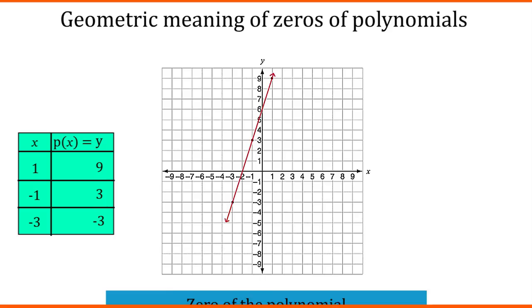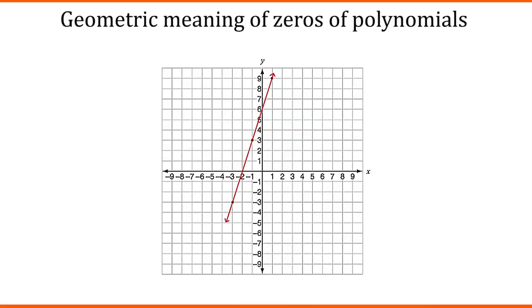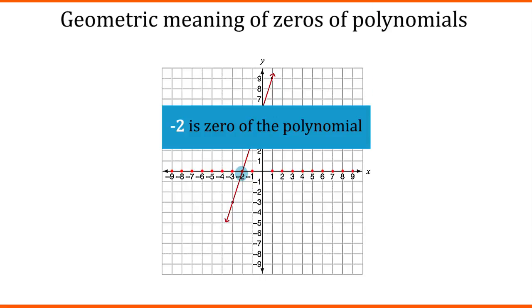And as we know, zero of a polynomial is nothing but the value of the variable when the entire polynomial is equal to 0. So, the zero of a polynomial is at any point on the x-axis where y is 0. As we can see in this example, our straight line is touching the x-axis at minus 2, where y equals 0. So, ultimately, minus 2 is the zero of this polynomial.